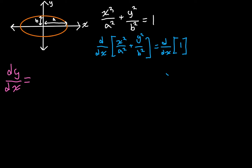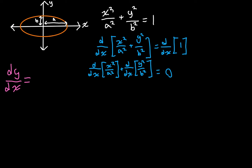The derivative of the constant 1 is 0. We can split the left side into two derivatives: the derivative with respect to x of x squared over a squared, plus the derivative with respect to x of y squared over b squared. Since a and b are constants, we can pull out 1 over a squared and 1 over b squared as coefficients.